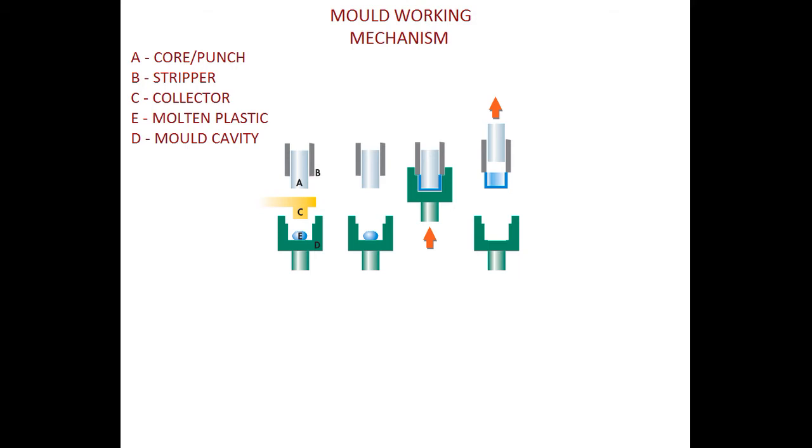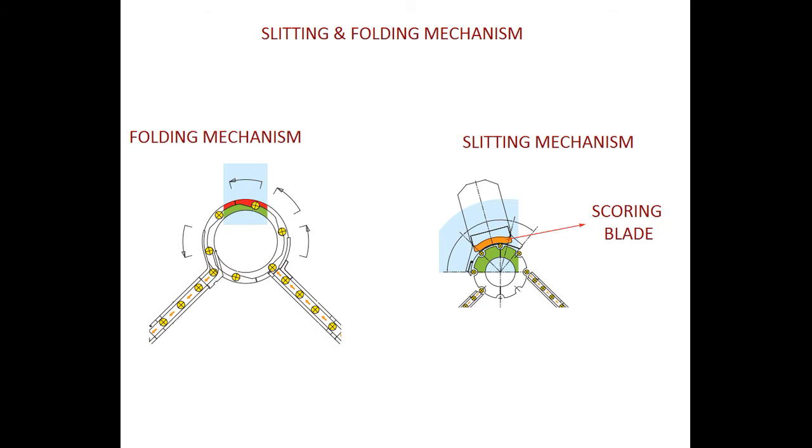Moving forward to another topic, that is slitting and folding mechanism. You can see on the left-hand side the folding mechanism, which is usually used to fold the outer part of the cap inwards. On the right-hand side you can see the slitting mechanism. The slitting mechanism contains a scoring blade which is used to cut the seal from the cap, such that every time you open a bottle the seal should remain in the bottle itself, making it pure and healthy to drink any beverages. So guys, let's see how caps are actually made in such machines.